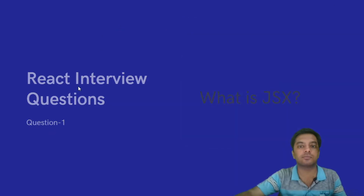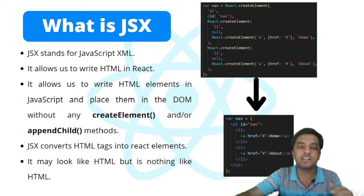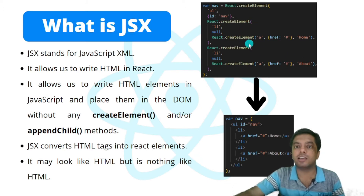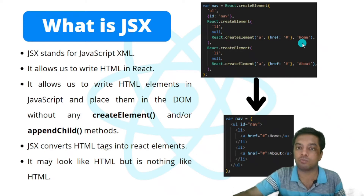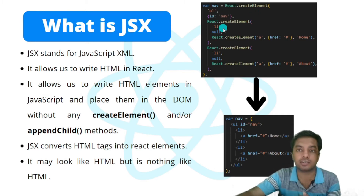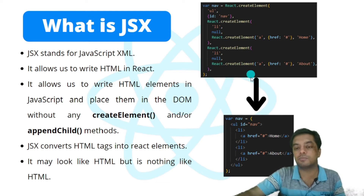The very first question could be: what is JSX? JSX stands for JavaScript XML. It allows us to write HTML code in React — HTML elements in JavaScript — and place them in the DOM without any createElement or appendChild methods. If we were writing the code without JSX, we'd have to write React.createElement, create an unordered list with an id of 'nav', then inside create a list item, and inside that create anchor tags. That results in very complicated, heavily nested code.